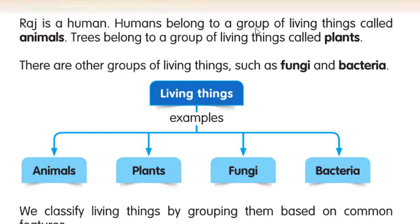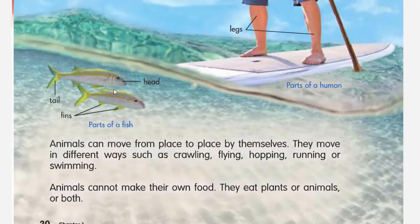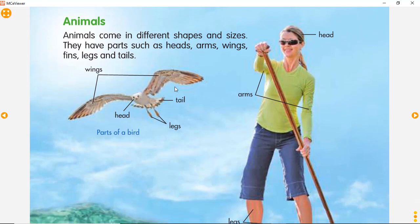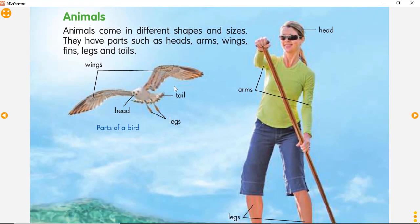In this meeting, we are going to learn about animals and plants. So, now open the next page on page 20. In here, we have animals. Ada dua contoh dari animals: yang pertama itu animal, dan yang kedua is human.